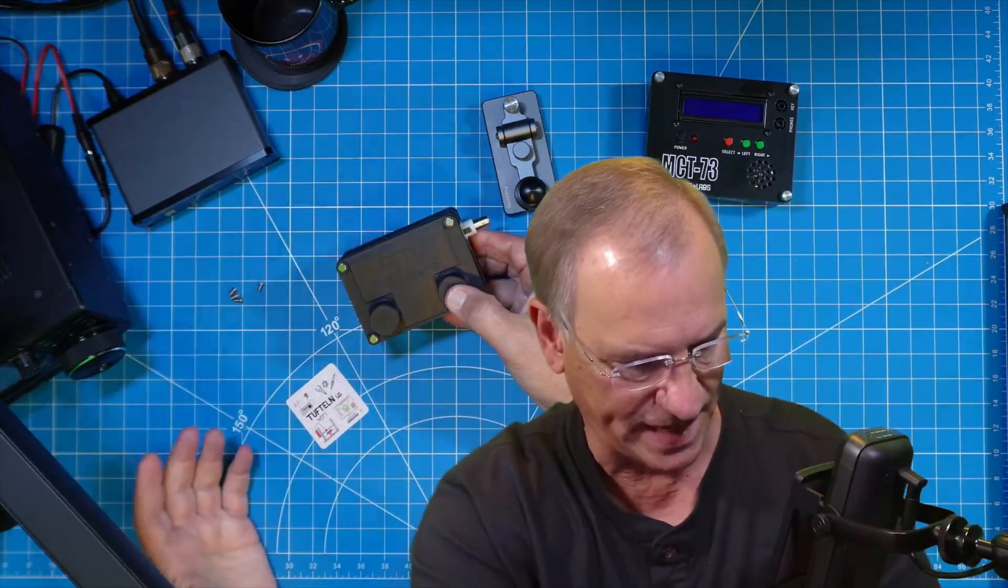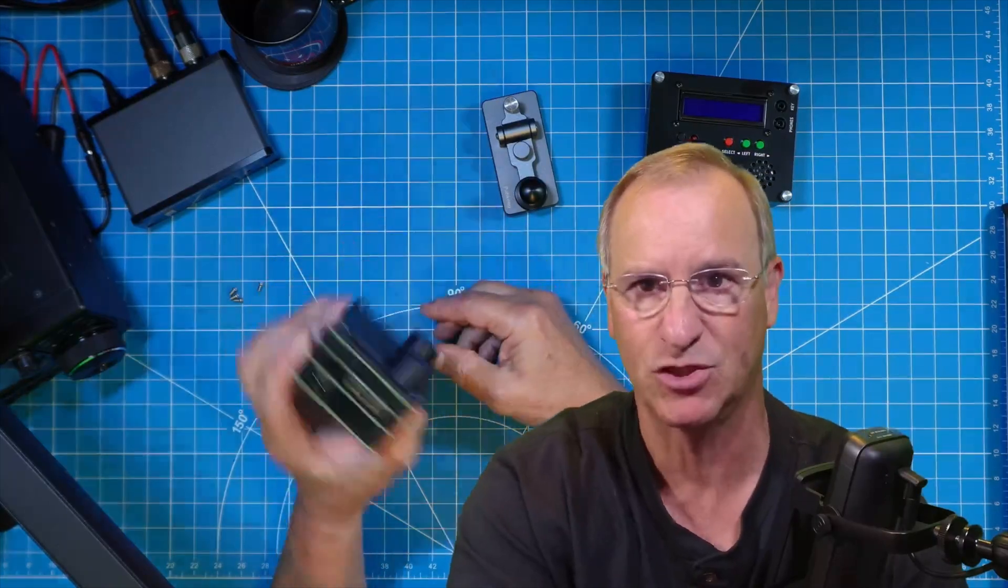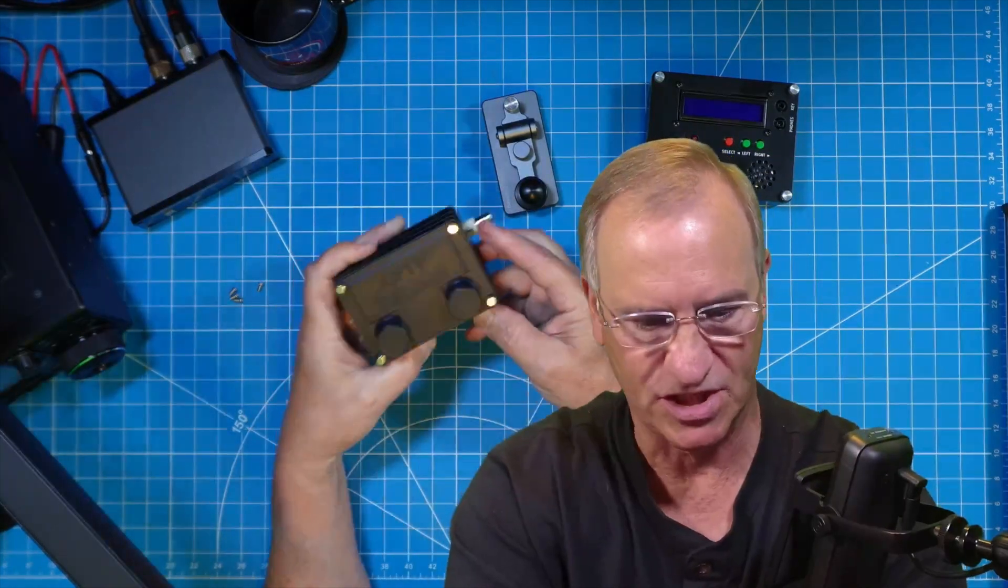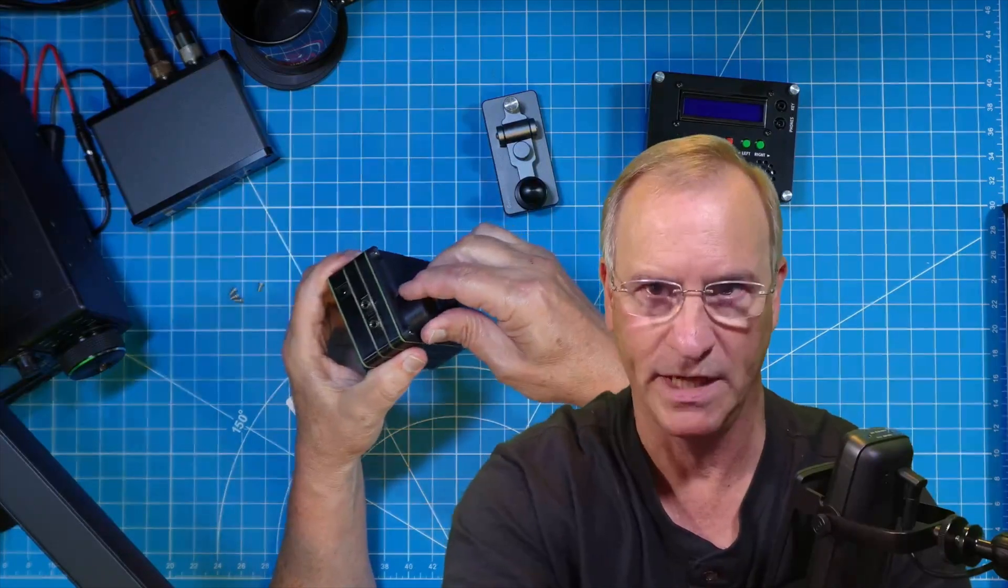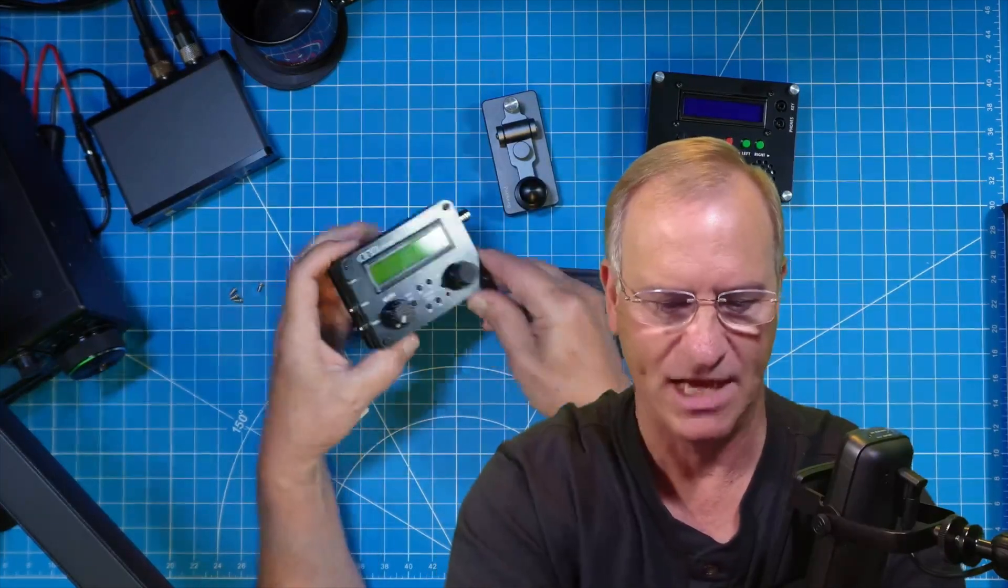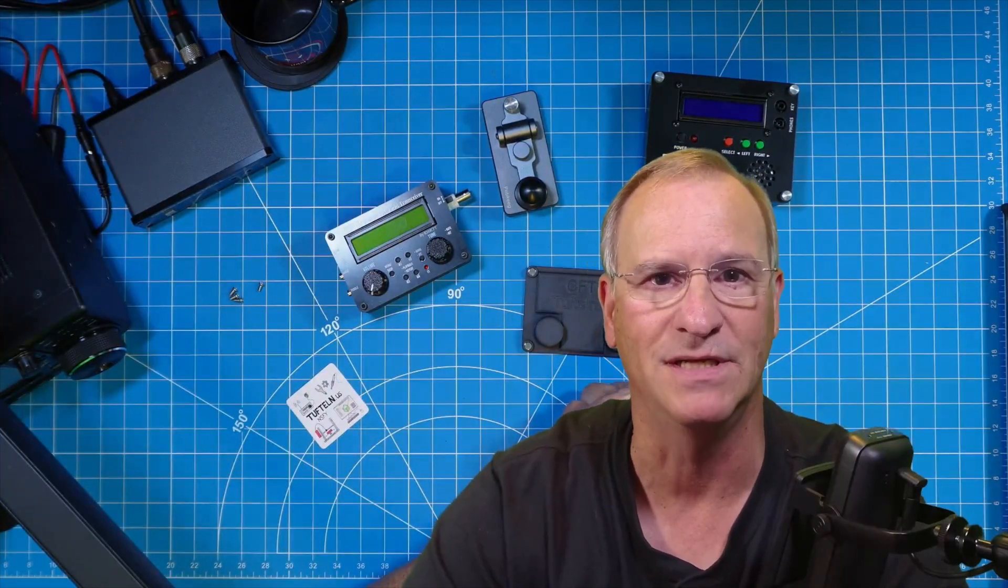But I can tell you right now that November 5 Foxtrot Yankee did a fantastic job with this. It is so good staying on. It's going to take a pretty good knock to take this off. And when you want it, tug on it and now you have access to your CW transceiver so you can go ahead and practice to your heart's content.